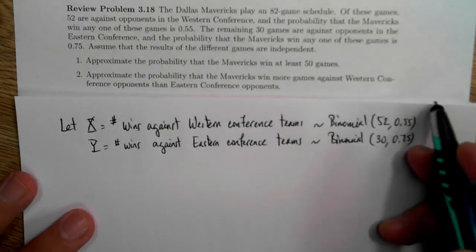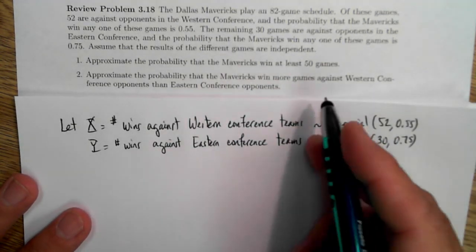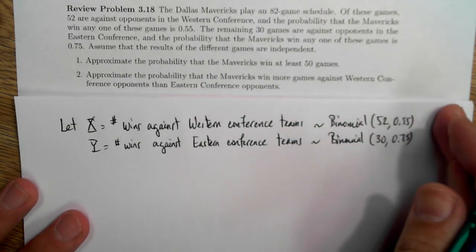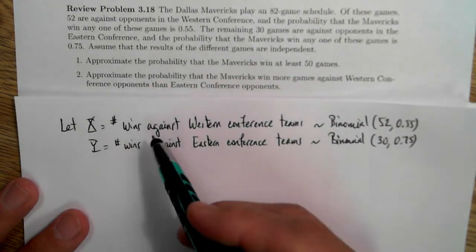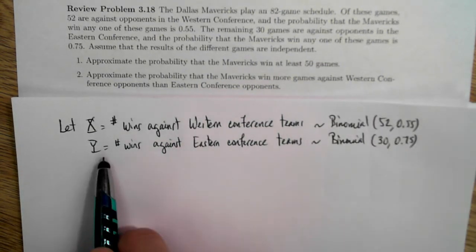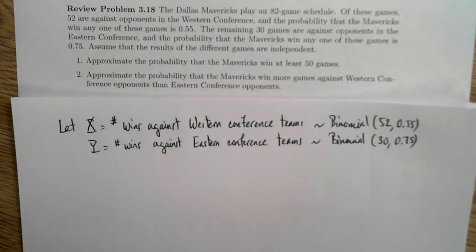The way that we're going to do this is find the probability that the Mavericks win at least 50 games, so the question is to find the probability that X plus Y is greater than or equal to 50. We will recognize that X is approximately normally distributed by the central limit theorem. Therefore, since X and Y are independent, X plus Y will also be approximately normally distributed.